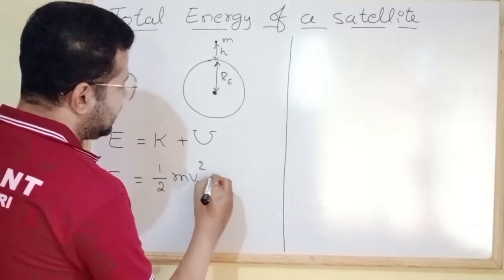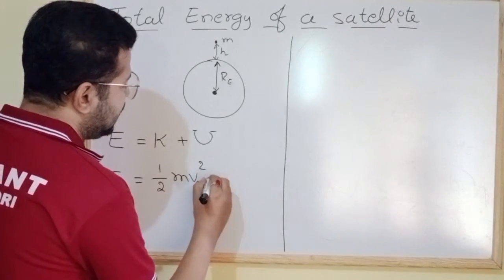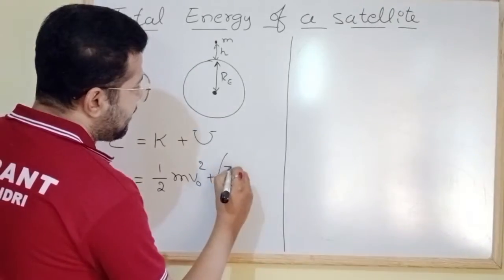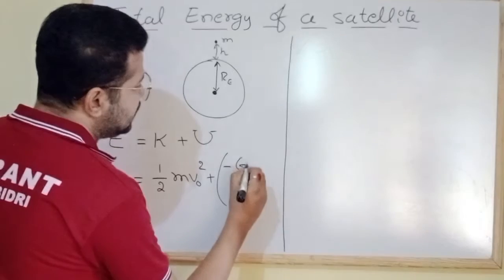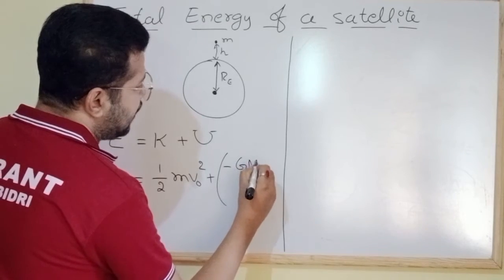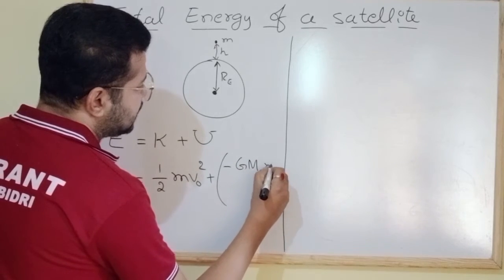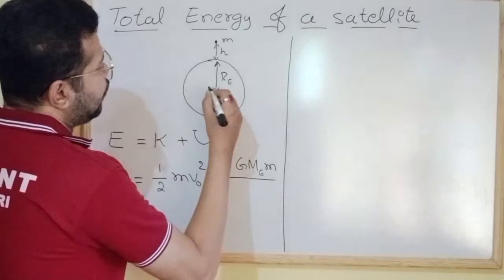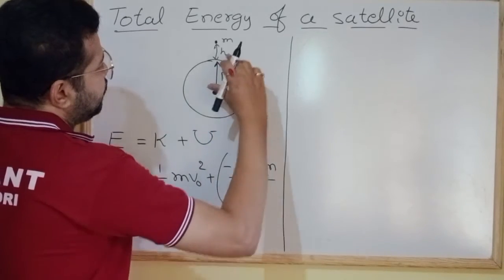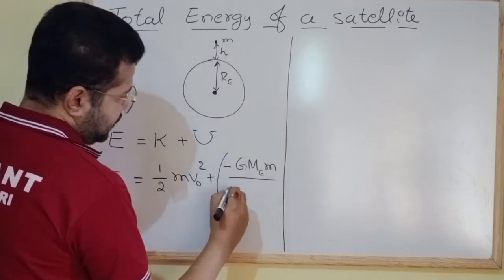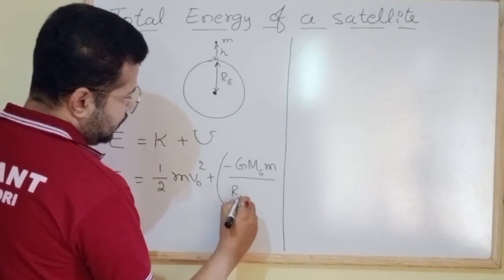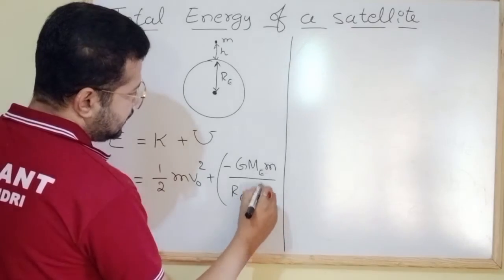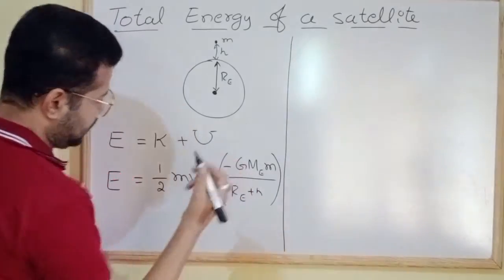Potential energy of a satellite is minus G times M_E times M divided by R, where R is R_E plus h — that is, the radius of the Earth plus the height.